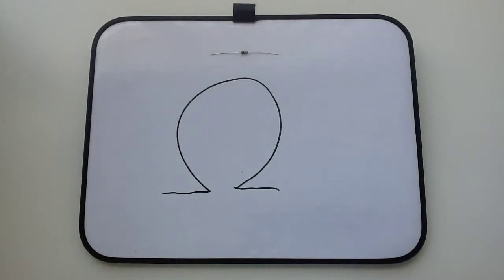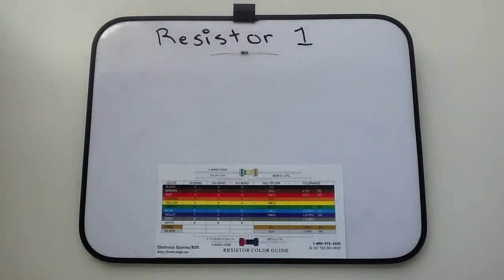I'm going to identify the resistance and tolerance for the 100k ohm resistor. To do this, I'm going to use the resistor color band guide to interpret the color bands on this resistor.